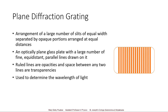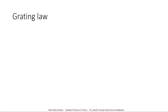This grating is usually used to determine the wavelength of light. Let us derive the grating law from it. Here on the left side I have drawn the schematic image for the grating. The opaque regions have a width of small a and the transparent regions have a width of small b.